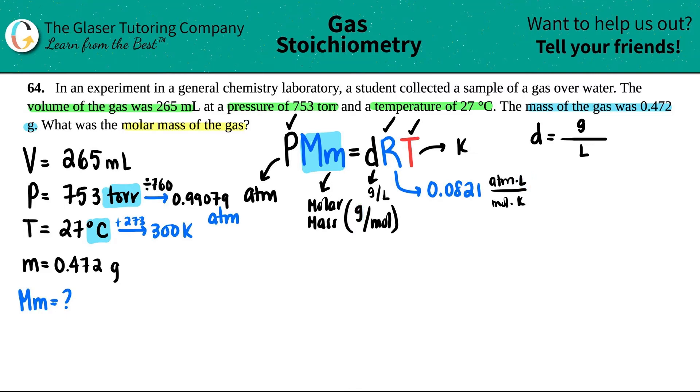They gave us the mass, so I have 0.472 grams divided by the volume. Unfortunately they gave it to me in milliliters, so I have to convert milliliters into liters. Just divide by a thousand or take the decimal and move it over three times to the left, so this would be 0.265 liters. Now let's find out what that density is: 0.472 divided by 0.265. I'm going to try not to round as much because this is not the final answer, so 1.7811 grams per liter.